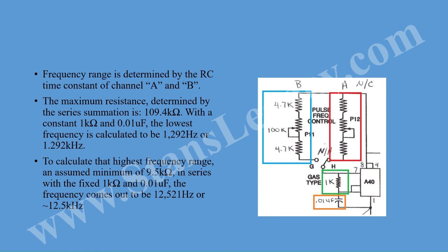The highest frequency range is assumed by reducing the potentiometer down to 100 ohms, which would represent the low end of the range of the potentiometer. Adding that to the 9.4 kilohm summation between the two 4.7k series resistors, we come out to approximately 9.5 kilohms. And while still in series with the fixed 1k and 10 nanofarad capacitor, the frequency comes out to 12.5 kHz.